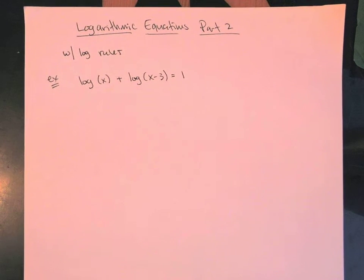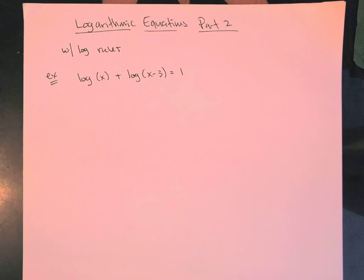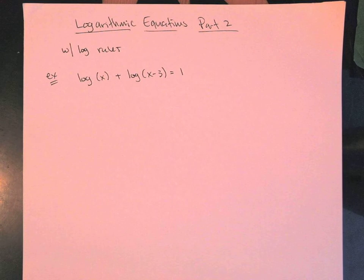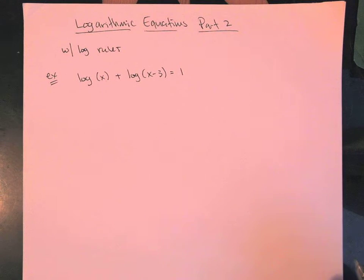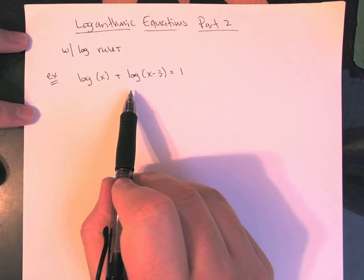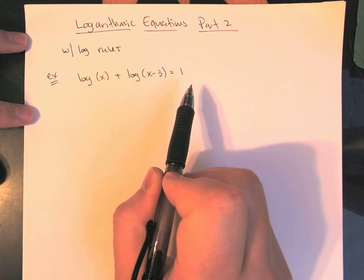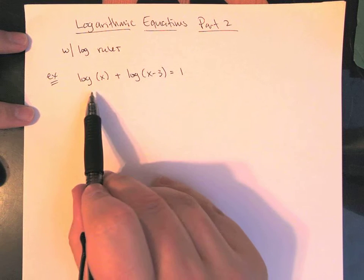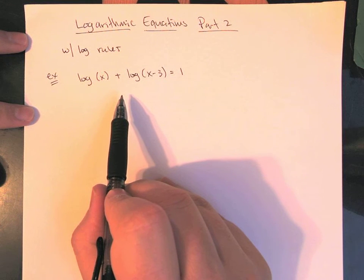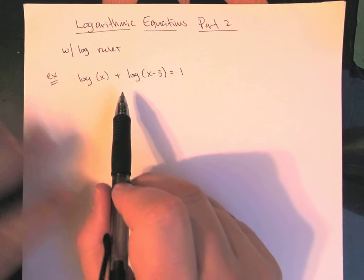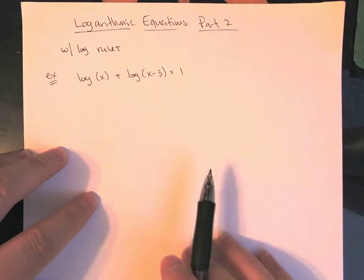Some more log equations. As these get more complicated, one of the tools in our toolbox is to keep using our log rules — the power rule, quotient rule, and product rule. If we have multiple log terms, one of the things we'll have to do most of the time is combine them down into one single log. In this case, I have log of x plus log of x minus 3 equals 1. These are regular LOG, so this is base 10. I can't just jump to 10 to the question mark equals x because I have two distinct logs on the left.